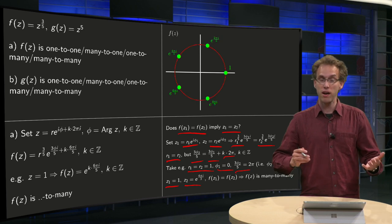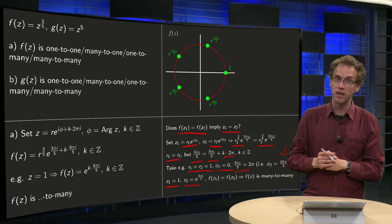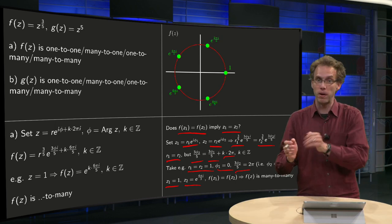So what do we have? z1 and z2 are different but they are still mapping to the same point in the range. So our function is many to many in this case.